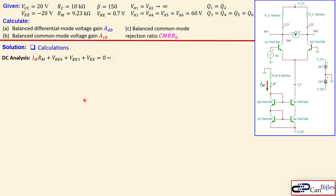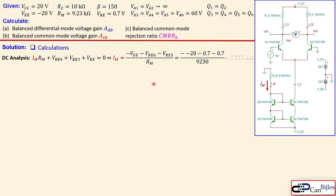We calculate Im by rearranging all three terms. The right side gives us negative values divided by Rm. Remember VEE is itself negative, so it becomes minus minus 20, then minus 0.7 minus 0.7, all divided by Rm as given in the circuit. This yields Im equal to 2.050 milliamps.